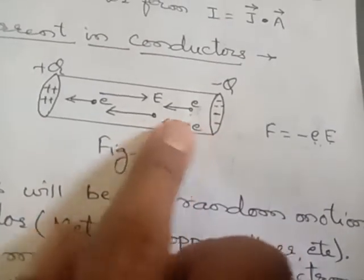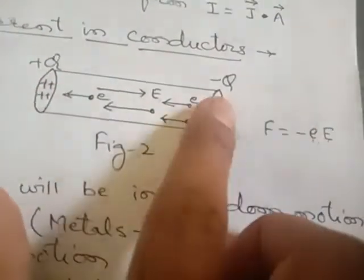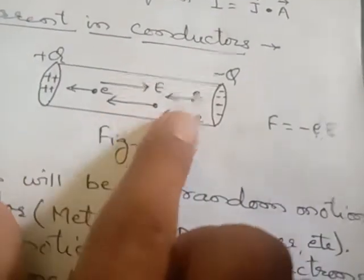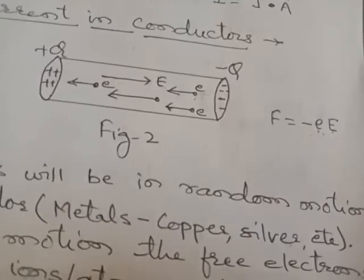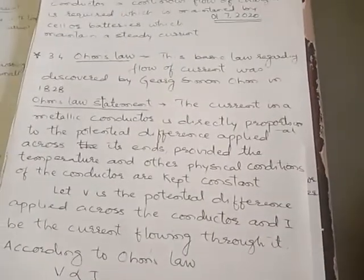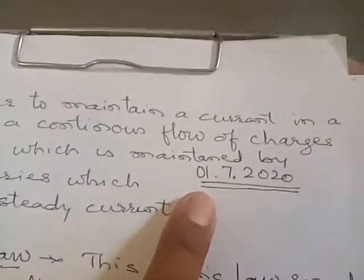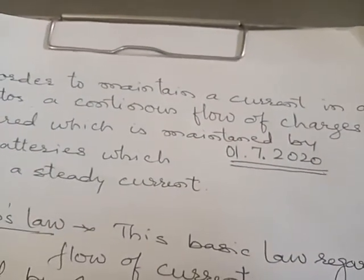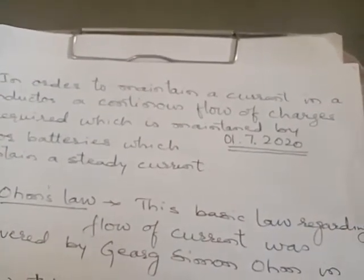This movement of electrons will constitute the current. Now, for a continuous flow of current we need a battery or cell. When we connect a battery or cell, what will happen is a continuous flow will be there, and this flow is called the steady flow of current.